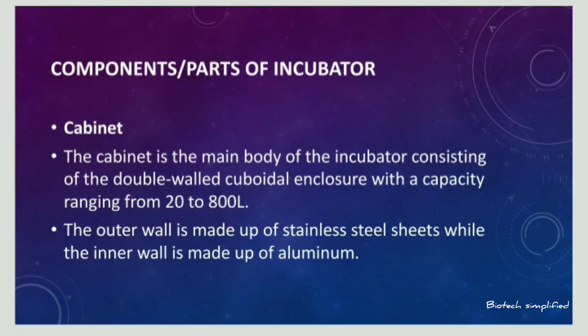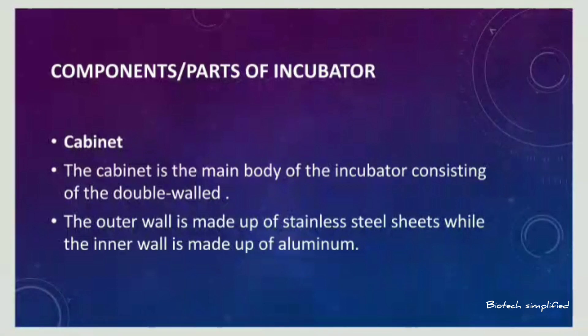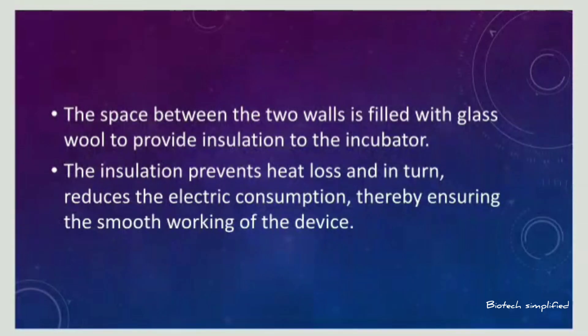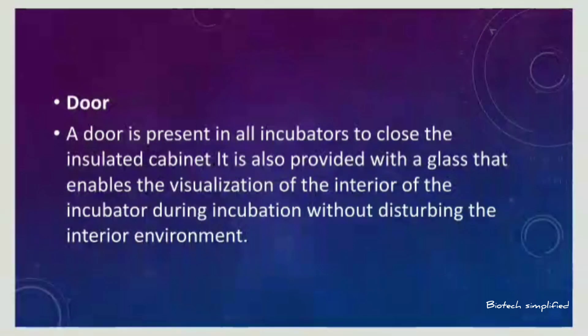Let us discuss the parts of an incubator. The first part is the cabinet, which consists of a double wall. The outer wall is made up of stainless steel, whereas the inner wall is made up of aluminium. The space between the two walls is filled with a glass wool, which provides insulation so that the incubator does not lose heat and also reduces electrical consumption.